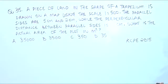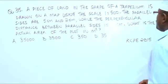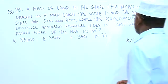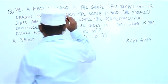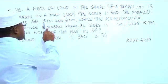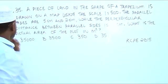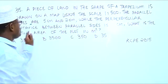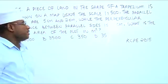A piece of land in the shape of a trapezium is drawn on a map using the scale 1 is to 500. The parallel sides are 5 centimeters and 2 centimeters, while the perpendicular distance between the parallel sides is 4 centimeters.